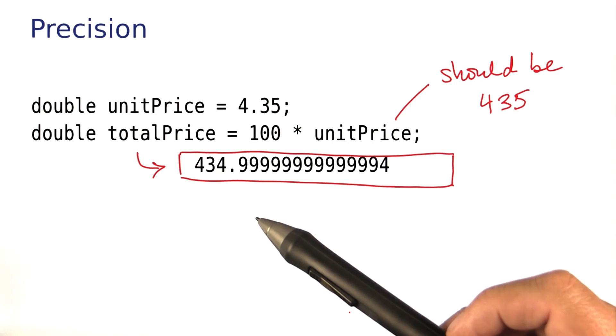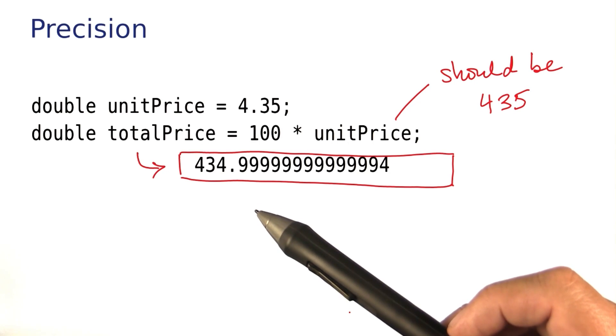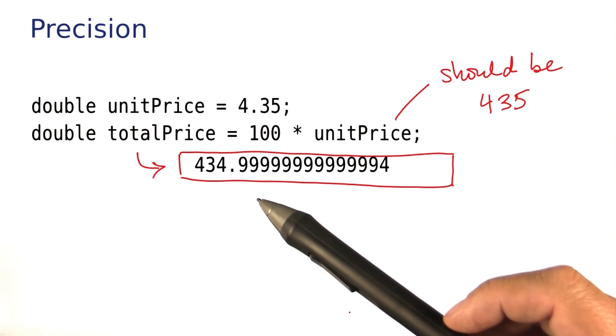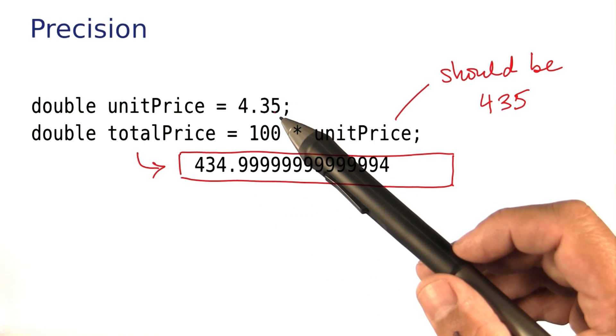The problem here is that the computer works internally in a different number system called the binary number system, and there's no exact representation for 4.35 in that system.